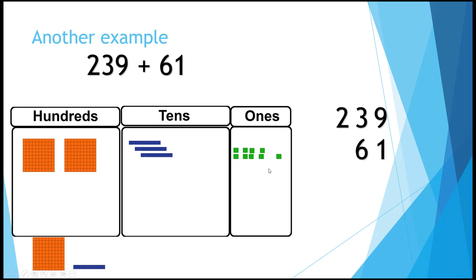Here's a bigger example: 239 plus 61. Add the ones first. 9 and 1 are 10, so we need to trade them in for a 10 block. And if we're adding the digits, 9 plus 1 is 10. Put down the 0, carry the 1 to the tens place. We have 1 ten.